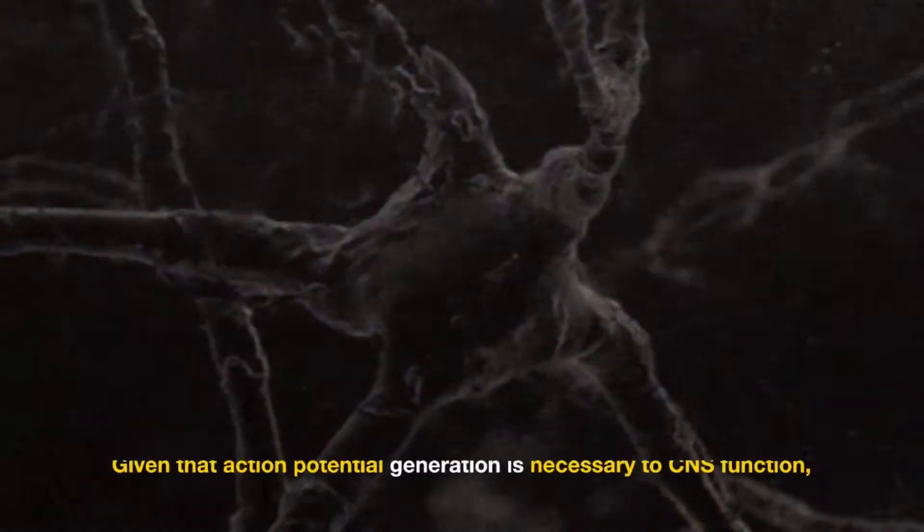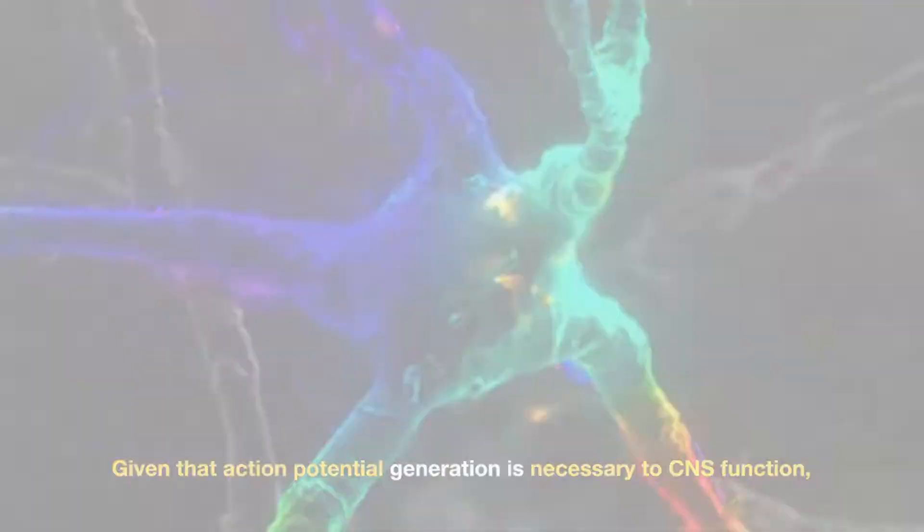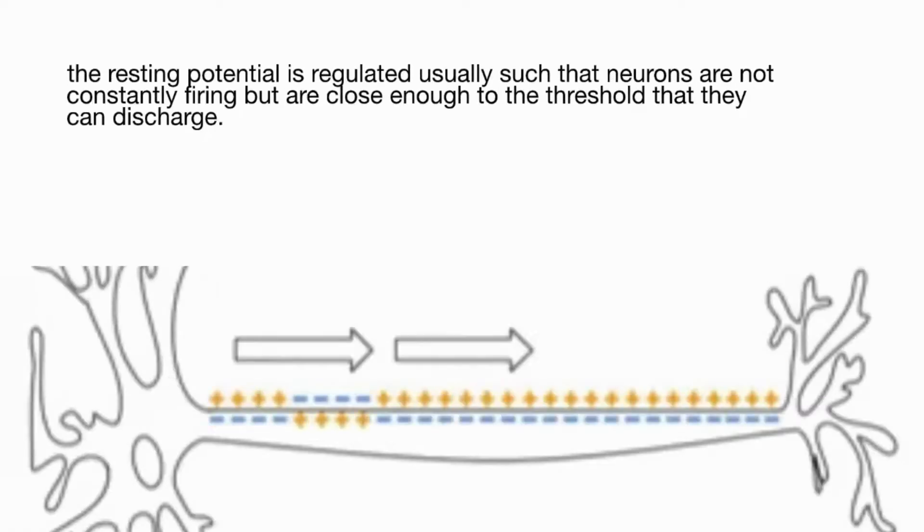Given that action potential generation is necessary to CNS function, the resting potential is regulated usually such that neurons are not constantly firing, but are close enough to the threshold that they can discharge.